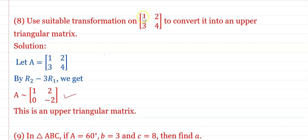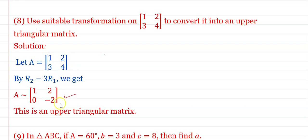Use a suitable transformation on matrix A = [[1, 2], [3, 4]] to convert it into an upper triangular matrix. Consider the diagonal. To make the element 3 equal to zero, apply the operation R2 → R2 − 3R1. Keep R1 as [1, 2]. For R2: 3 − 3×1 = 0; 4 − 3×2 = 4 − 6 = −2. The upper triangular matrix is [[1, 2], [0, −2]].